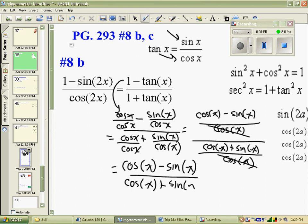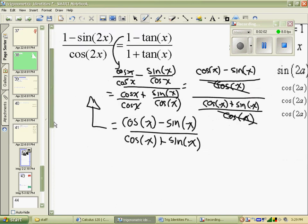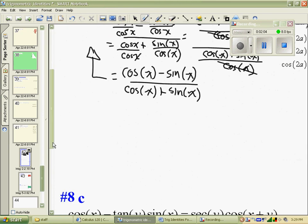Well, that doesn't look at all like 1 minus sine 2x over cos 2x. So I'm going to try multiplying just for pure intuitive sake. I'm going to multiply by the conjugate on here.